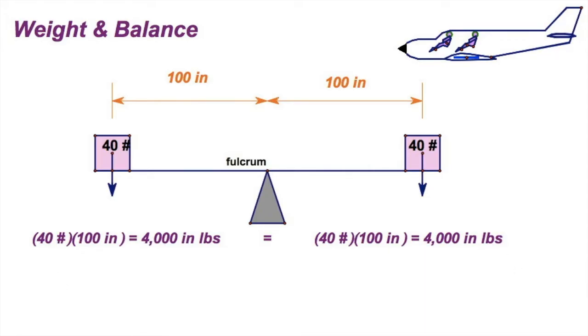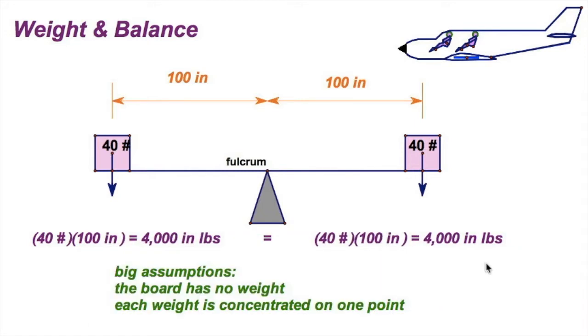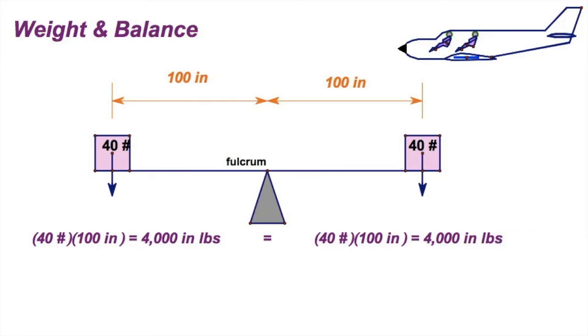We have to make a couple big assumptions in this exercise. First off, this board has no weight, and that's not realistic. We'll move beyond that when we get to an actual airplane. But we'll say this board's got no weight, and all the weight is concentrated at a single point here and a single point here. Little teeter totter in perfect balance. This is just so we get the basics down.